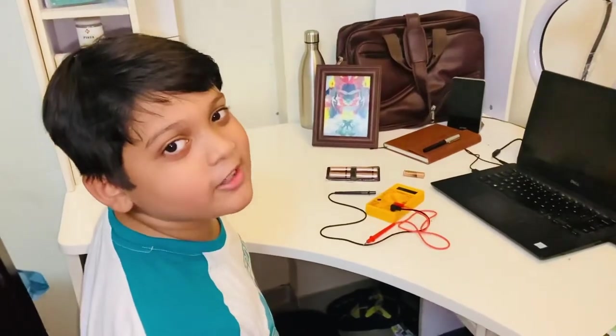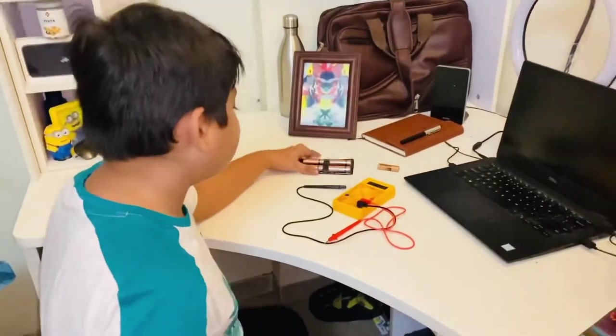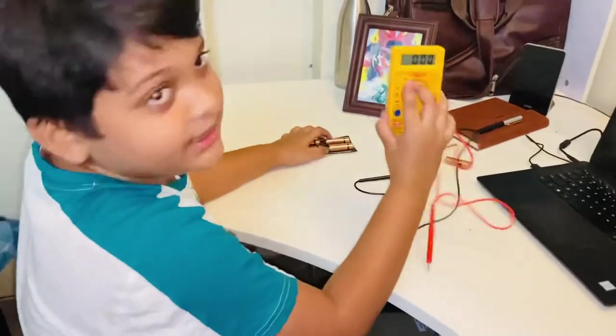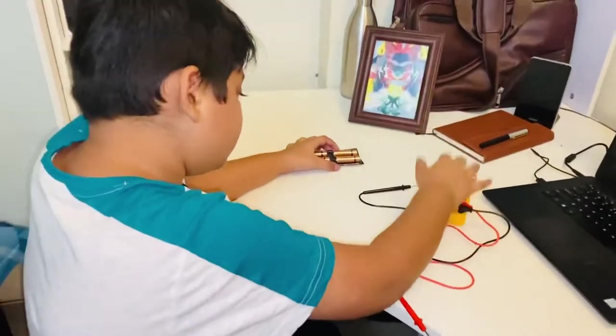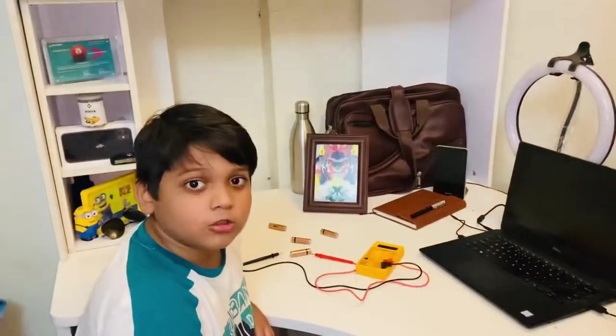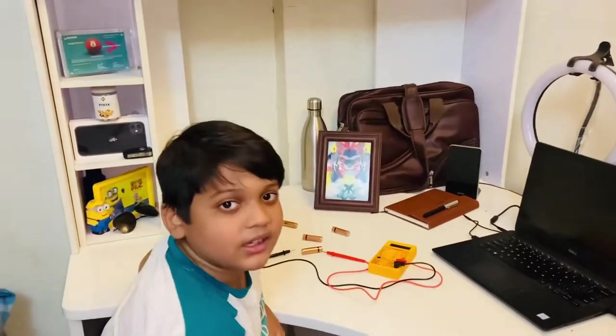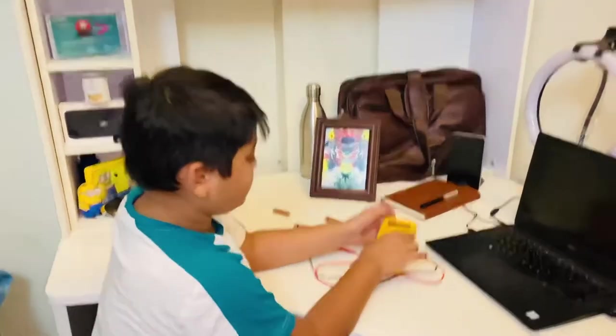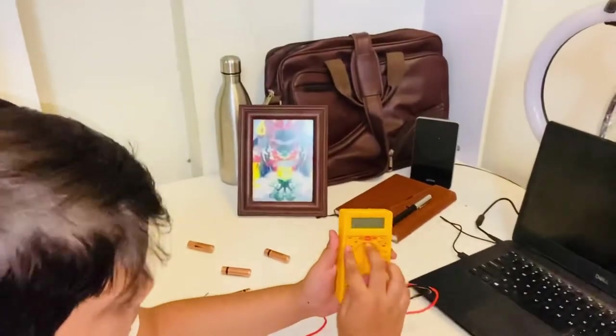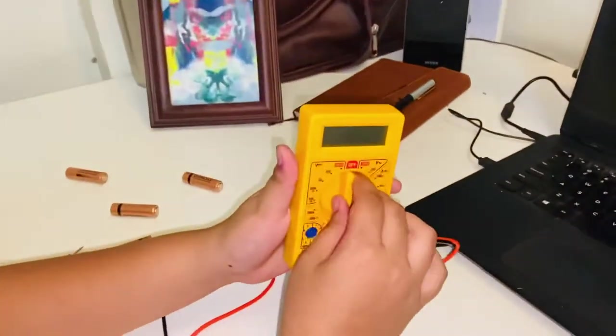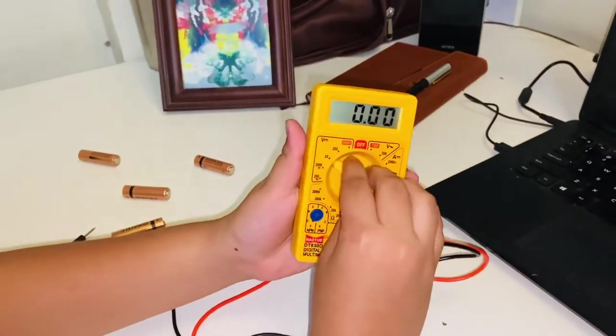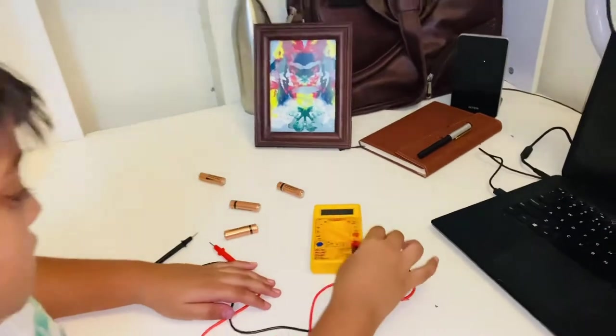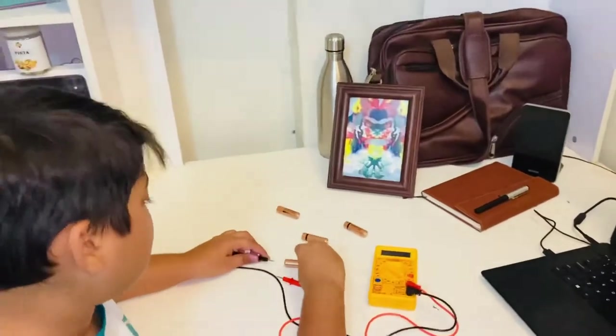So the materials we are going to need are four batteries and a multimeter. The first step to do this experiment is to turn on the multimeter. We are going to set this voltage to 20. Now it's done.